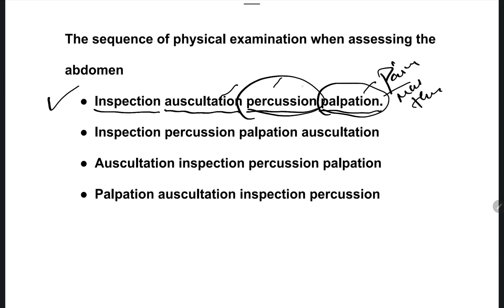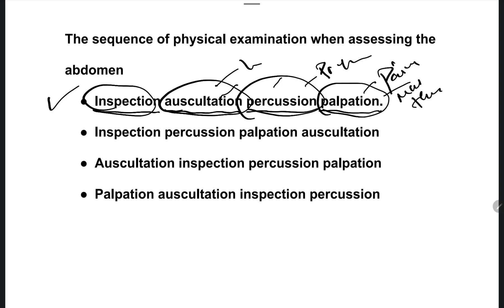Percussion involves pressing to assess. Auscultation is listening, inspection is vision — seeing. This is the method for abdominal assessment.